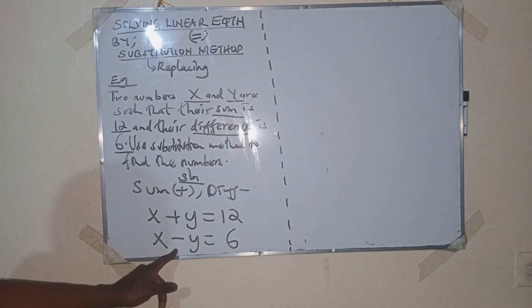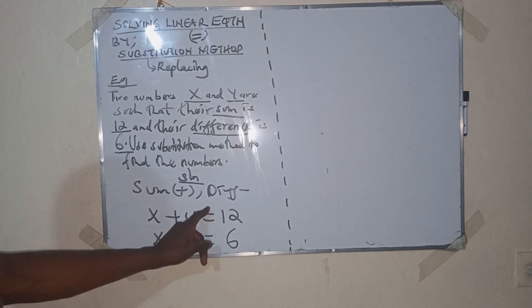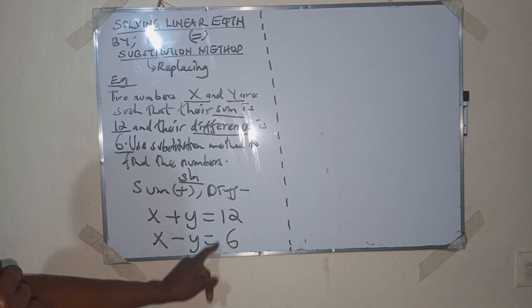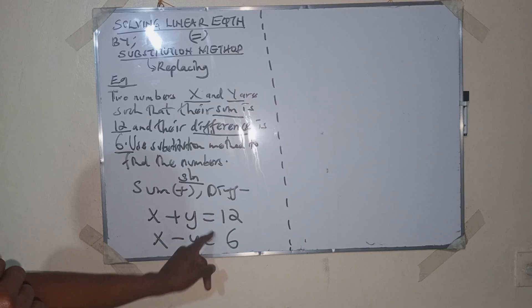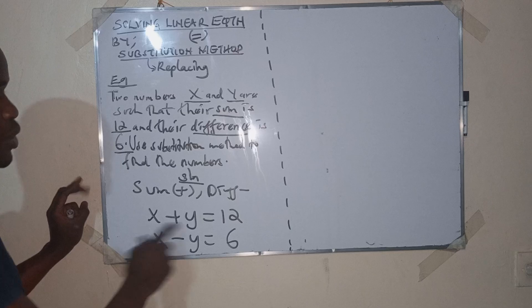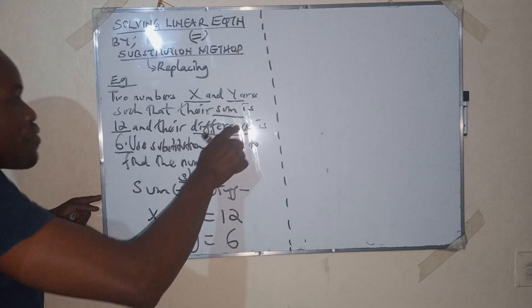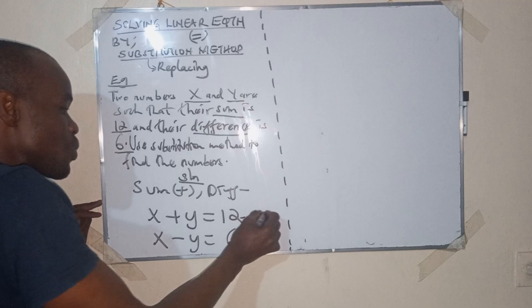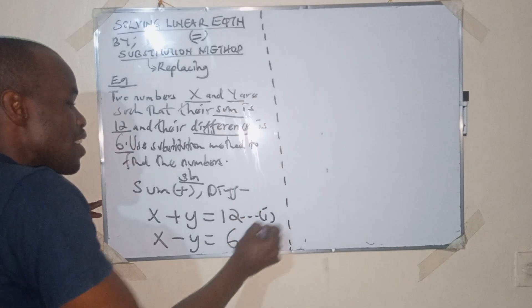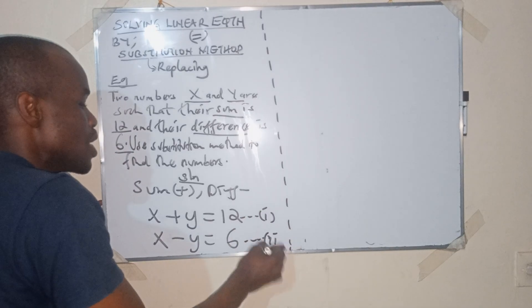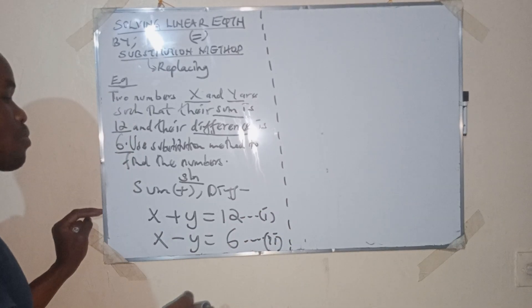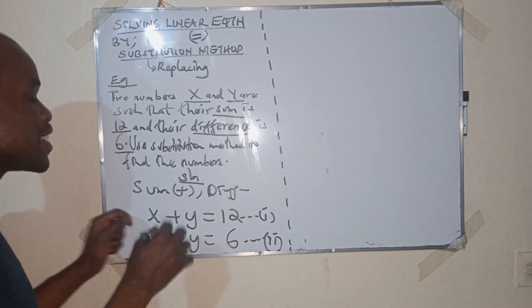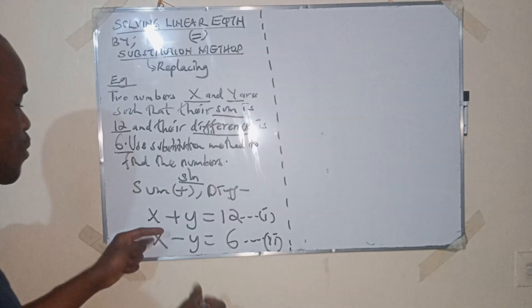These are two linear equations because of the equation sign. So we have equation 1: x plus y equals 12, and equation 2: x minus y equals 6. In substitution, you make either x or y the subject of the formula by taking the rest to the other side.